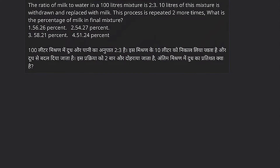Hello students, good evening, welcome back. Our question is: the ratio of milk to water in a 100-liter mixture is 2:3. Ten liters of this mixture is withdrawn and replaced with milk. This process is repeated two more times. What is the percentage of milk in the final mixture?